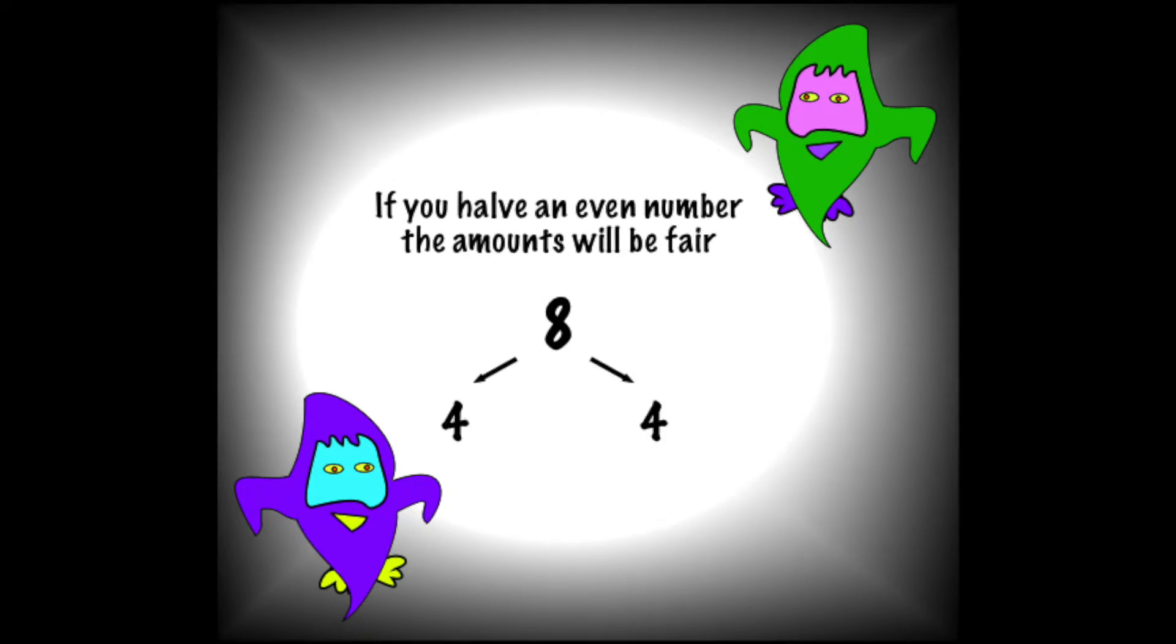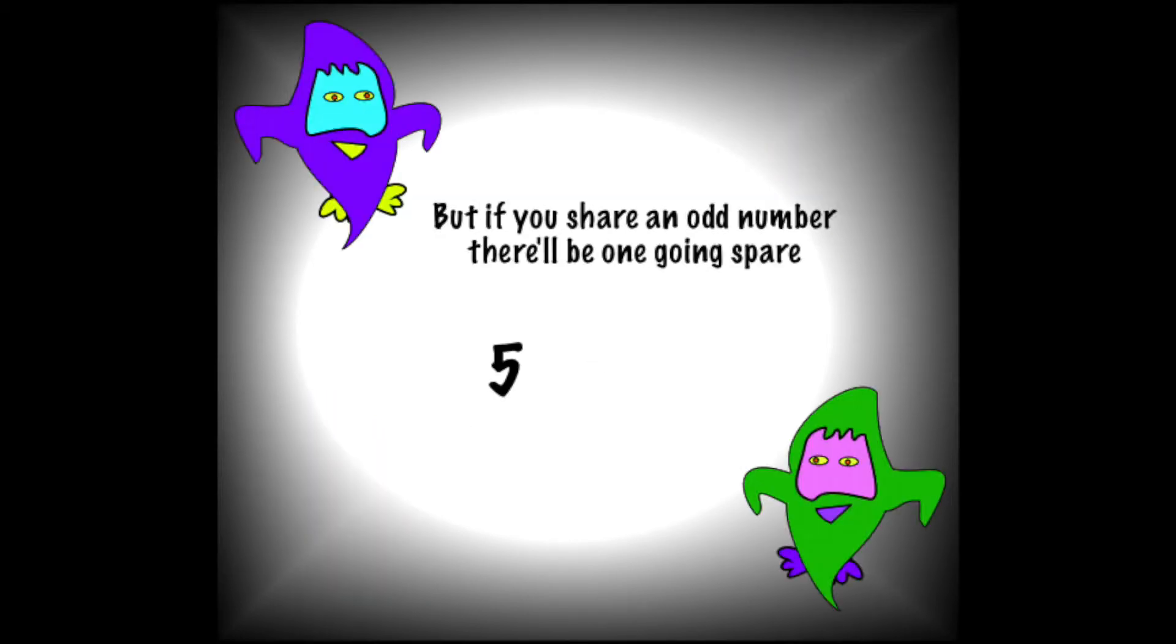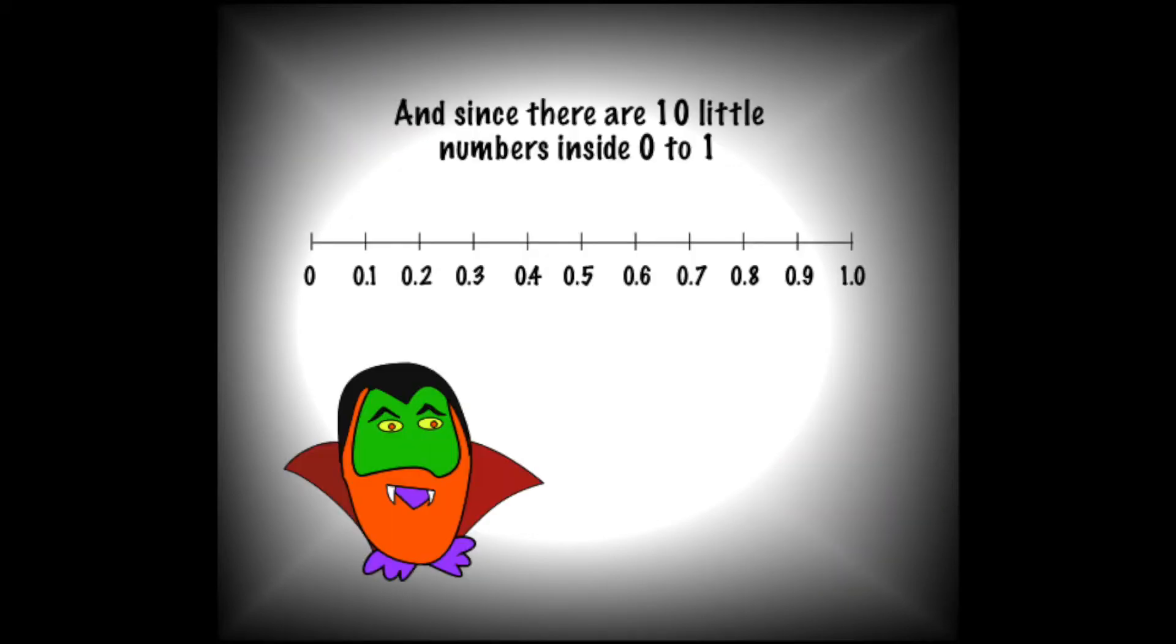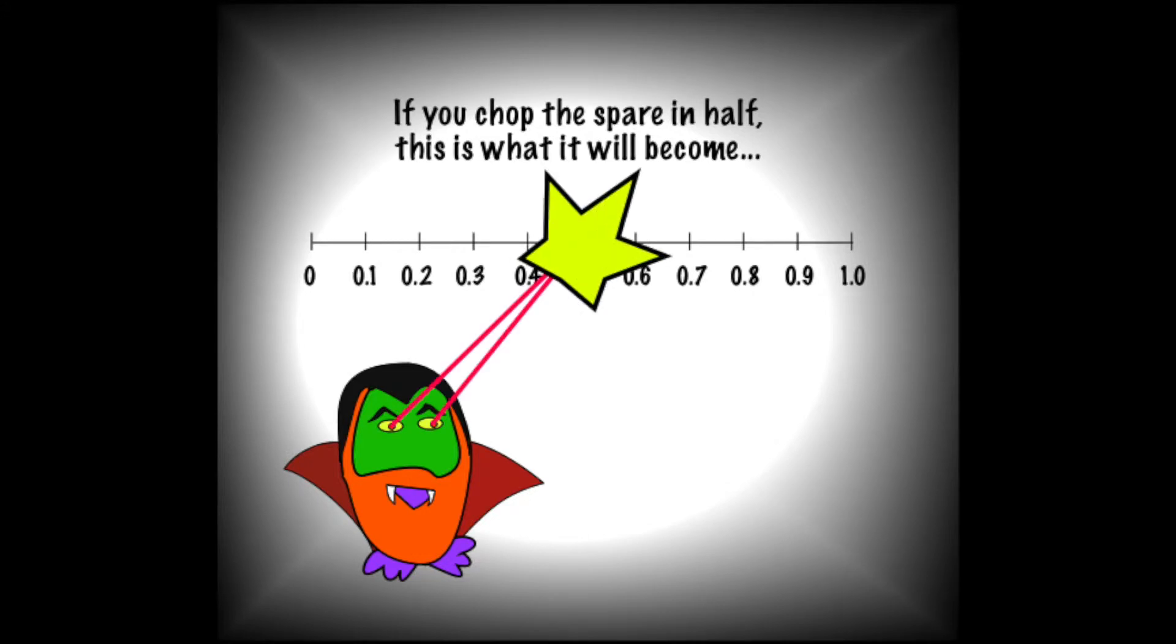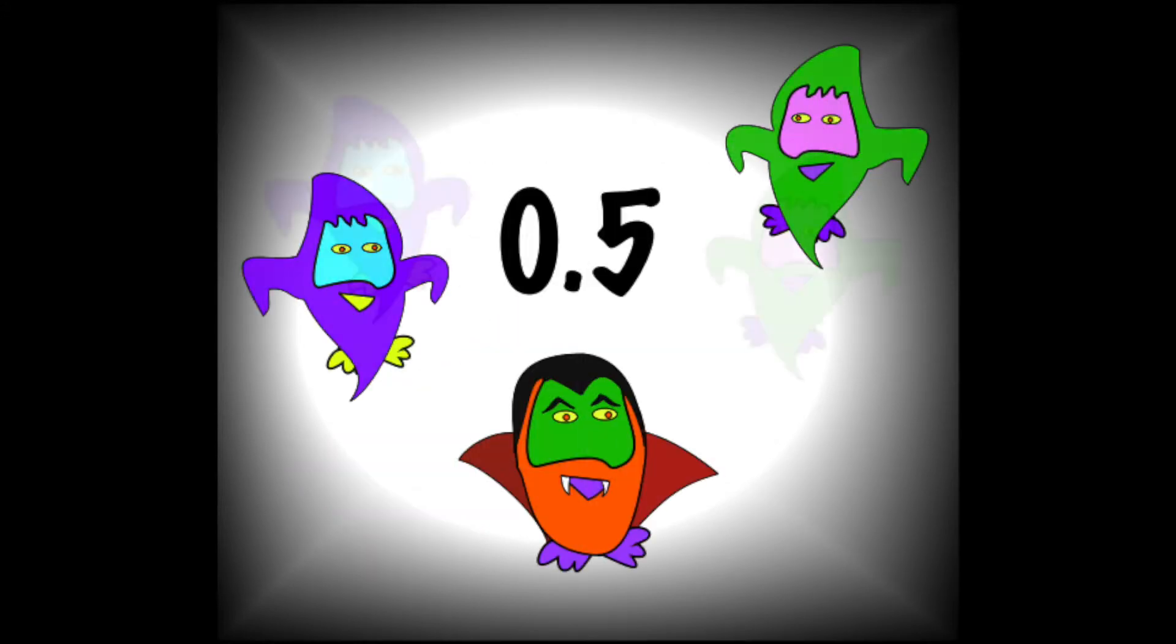If you have an even number, the amount should be fair. But if you share an odd number, there'll be one going spare. Since it's ten little numbers inside zero to one, if you chop a spare in half, this is why it will become 0.5.